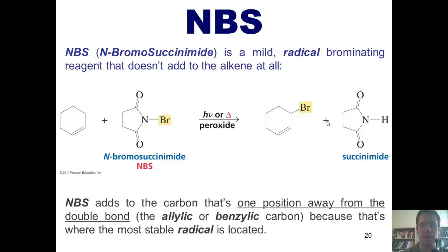That's restated once again in this paragraph. NBS adds a bromine to the carbon that's one position away from the double bond, which is the allylic or benzylic carbon, because that's where the most stable radical is located.